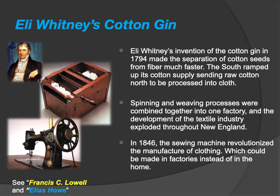The raw cotton would be grown and processed by the cotton gin in the South, and then shipped up to the North where it would be made into actual textiles — whether that be blankets, shirts, or what have you. Spinning and weaving processes were combined together in one factory, which developed the textile industry that exploded throughout New England.